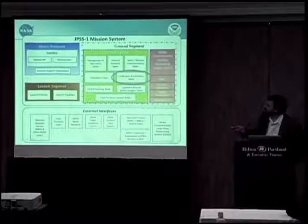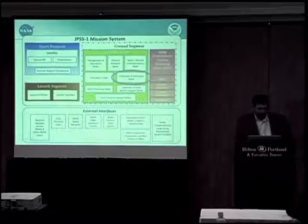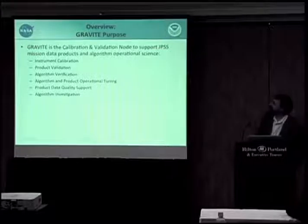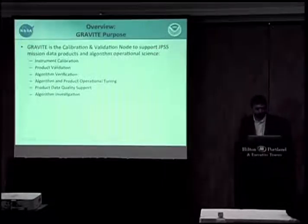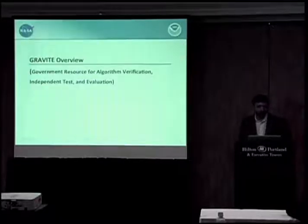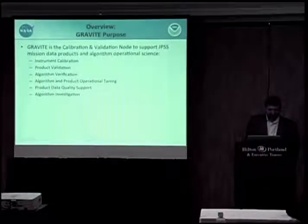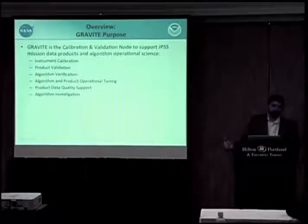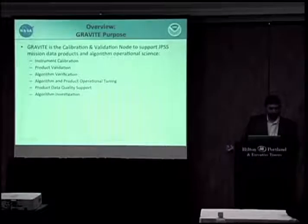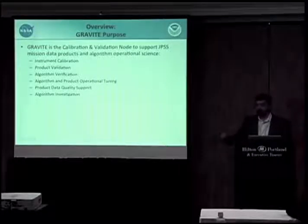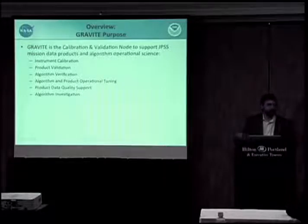This is another diagram that shows us here as the Calibration Validation Node. In particular, we named our node because we're like other NASA and government agencies. We've got to have an acronym. So we came up with one called GRAVITY: the Government Resource for Algorithm Verification, Independent Test and Evaluation. We spent about a month coming up with that name. And so we support the instrument calibration activities, the product validation activities, algorithm verification, algorithm product operational tuning, product data quality support. That's monitoring that the products are continuing to do what we validated that they do and investigation of how to improve those algorithms over time.